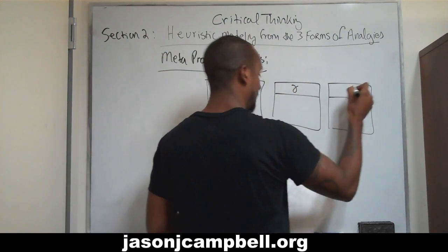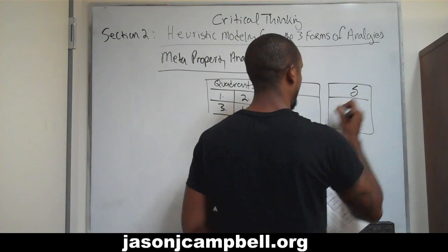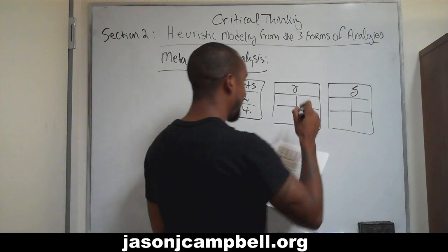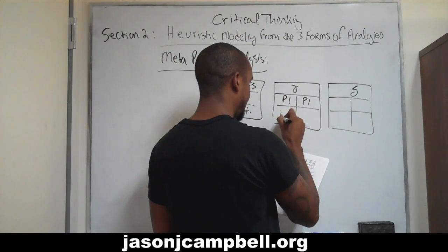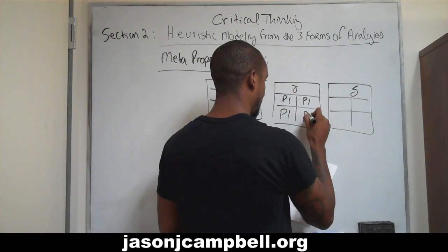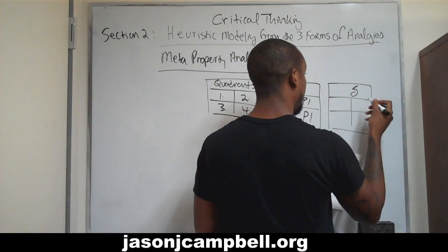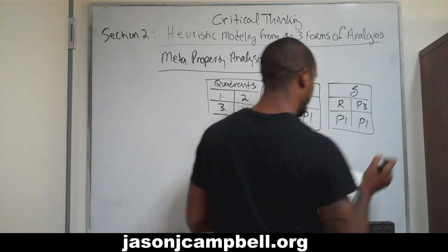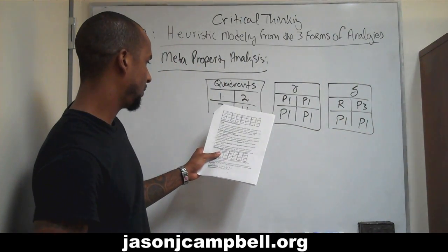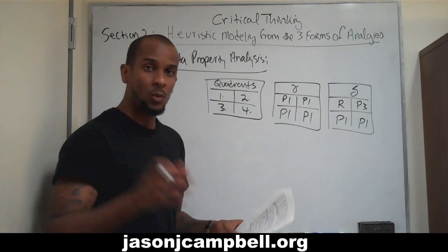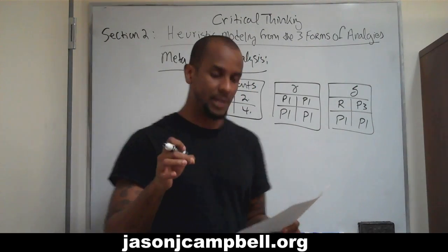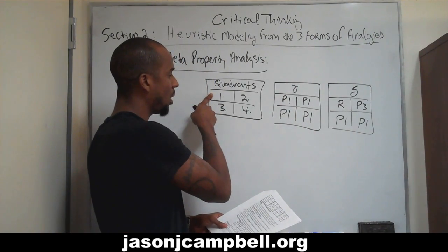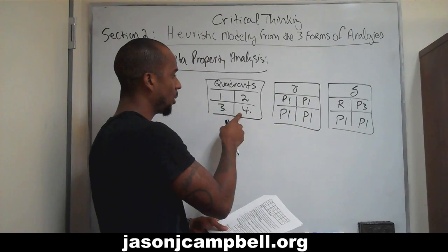This is gamma, this is delta. We'll populate gamma with all P1s — this is just for example so you understand. And we'll populate delta with a random property generator: P3, P1, and P1. Now let's look at this. We're talking about meta-properties, so: quadrant location — upper left, upper right, lower left, lower right.